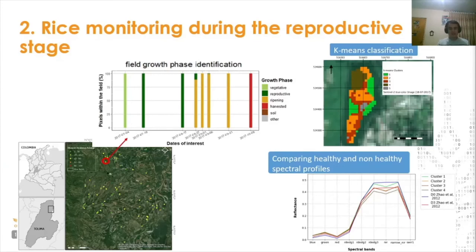For the second case, we used data collected for the northern area of the Department of Tolima, aimed at detecting inside crop fields zones that were affected by any kind of stress during the reproductive stage. We selected a certain number of fields planted with rice, and found which dates those fields were in the reproductive stage using the methodology explained previously. Using spectral data drawn from the Sentinel-2 mission, we classified the patterns using k-means with the intention to differentiate which areas were different from each other.